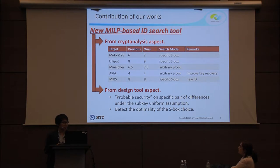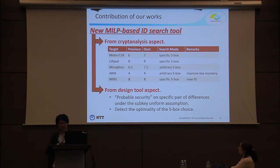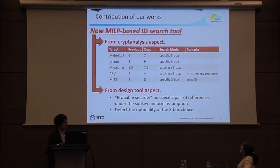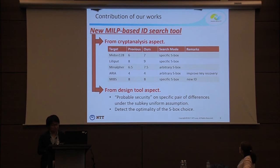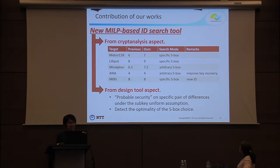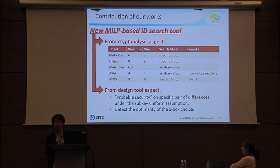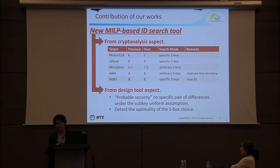From the cryptanalysis aspect, we apply our new tool to five block ciphers and, as a result, we get improved impossible differential characteristics. Due to time limitations, I will only explain the cases of Midori and Liripat, because these two applications are the most interesting. From the design aspect, by using this technique we can get something like provable security on specific pairs of differences under the subkey uniform assumption, and by using arbitrary S-box mode, we can detect the optimality of the S-box choice.